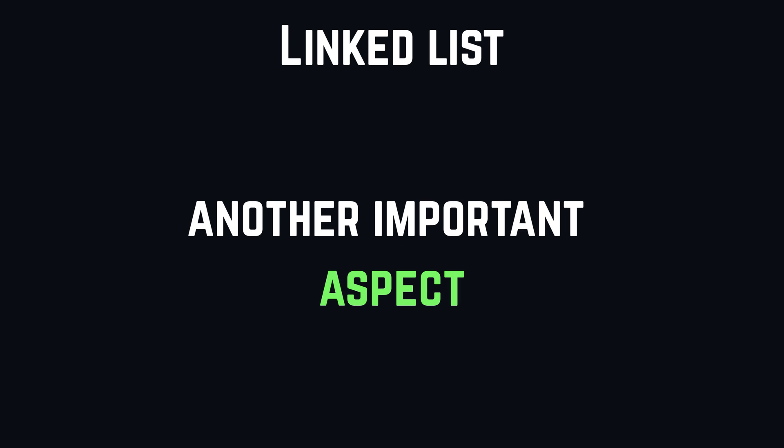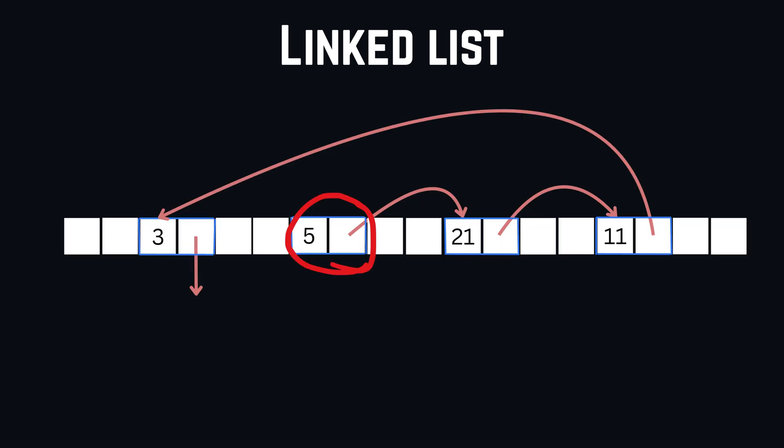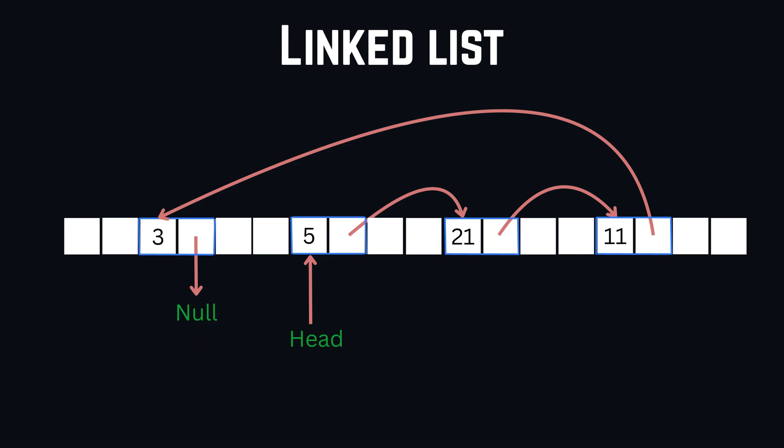Another important aspect is when we want to access a linked list, because we typically use a pointer that points to the beginning of the list, known as a head pointer. Additionally, the last node in the list has no successor, so in programming we usually just set the pointer to null, which is basically a placeholder representing nothing.